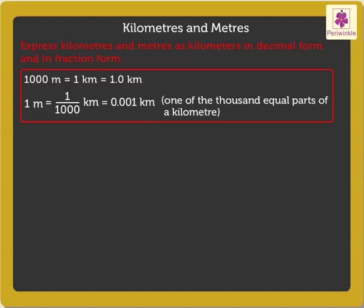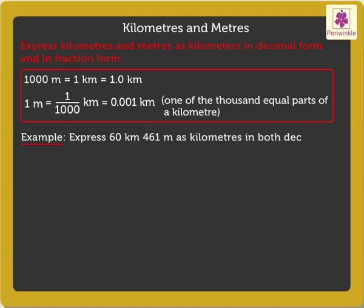Now, let's take an example to understand it in a better way. Express 60 KILOMETERS and 461 METERS as KILOMETERS in both decimal and fraction form.